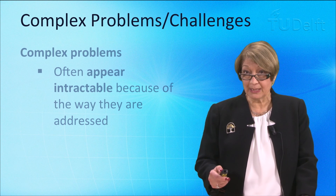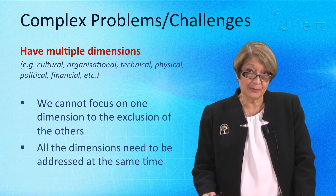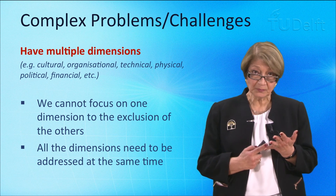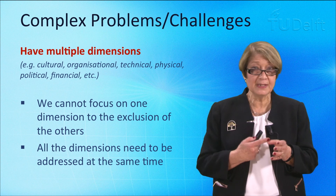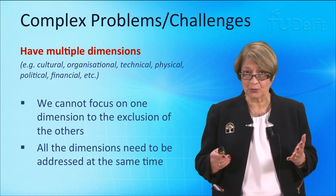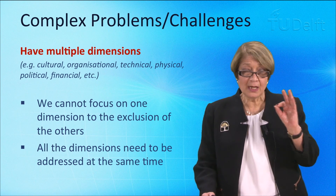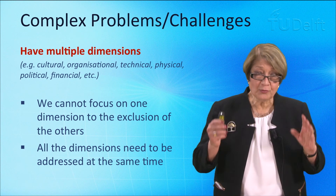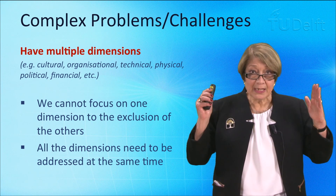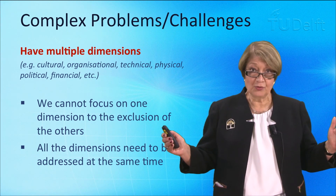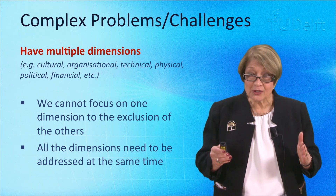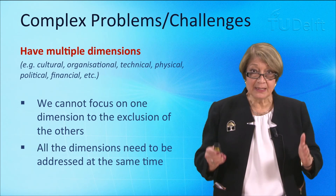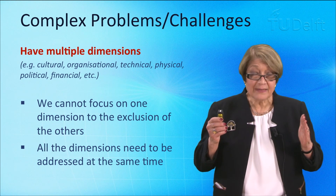Complex problems or challenges have multiple dimensions — they can be cultural, organisational, technical, physical, political, financial, and so on. And yet what we often do as humans is choose one of those dimensions and focus on that to the exclusion of all others. We might say it is only a technical problem, or only a financial problem, or only a cultural problem. We focus on that single dimension and do not address all the others, which we cannot actually do because the dimensions are interrelated, interconnected, and they co-evolve — they influence and change each other.